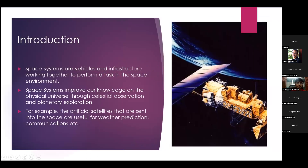Here at the introduction page, we talk about what space systems really are. Space systems are vehicles and infrastructure that work in a particular space environment to perform a particular task. A satellite, for example, is sent into space for weather forecasts, communication, mobile communication, observing celestial bodies, and monitoring the natural resources of Earth. Space systems improve our knowledge of the physical universe through celestial observation, and astronauts can collect specific information on planets or search for life on other planets.